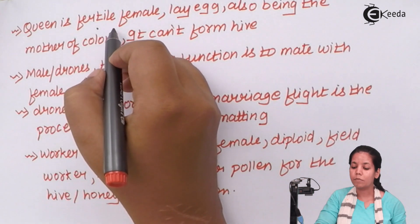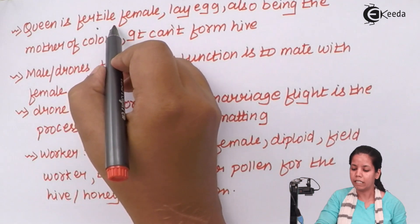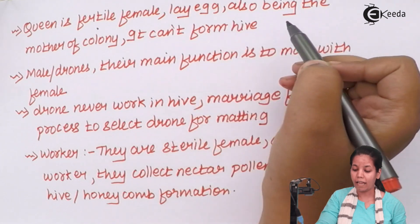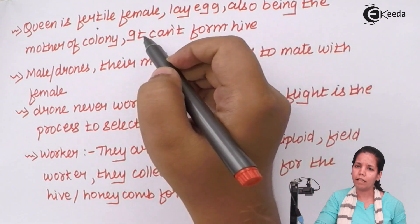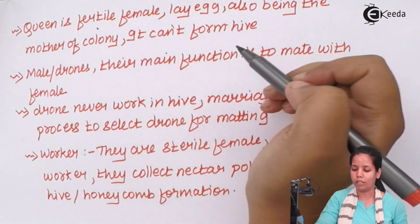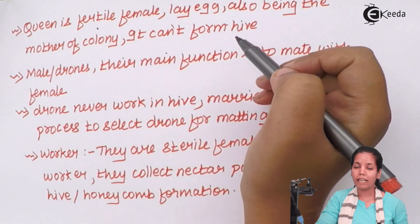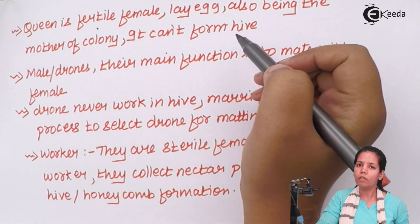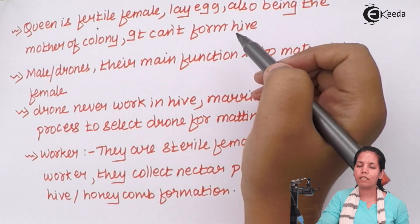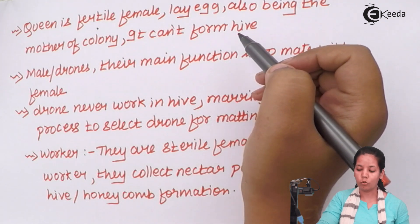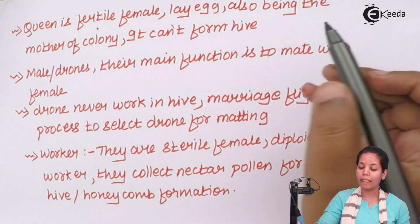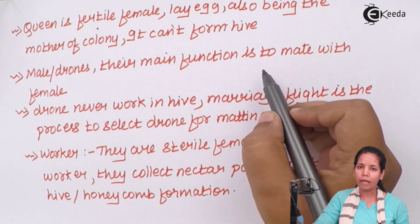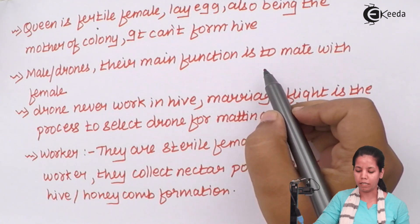The queen bee is basically a fertile female that lays eggs and is the mother of the colony. For mating purposes, the male drone is used, and its main function is to mate with the female.